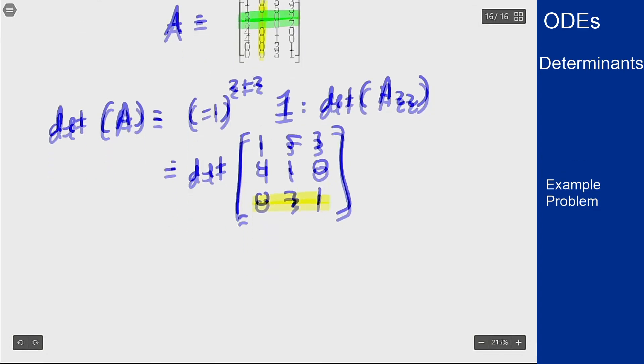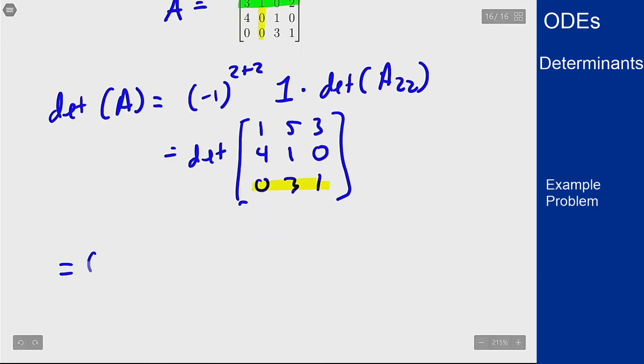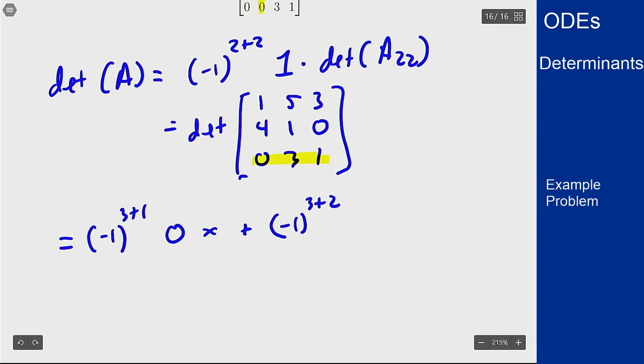So this determinant here is equal to negative 1 to the column 1 row 3, 1 plus 3, times the value there which is 0, times—I don't care what's left—plus negative 1 to the row 3 column 2, the value there which is 3, times the determinant of what's left, which would be the minor removing that row and that column. That's going to be [1 3; 4 0].